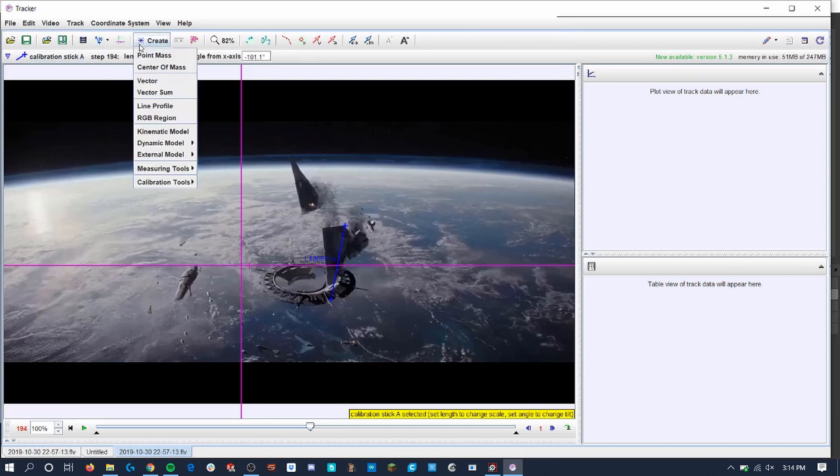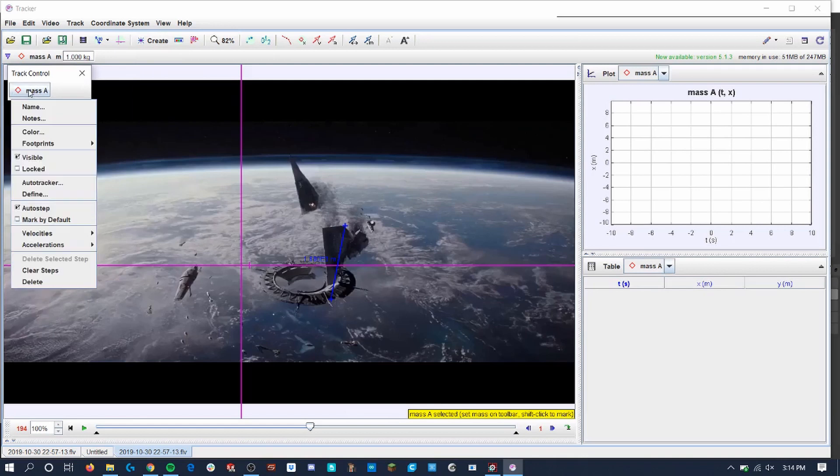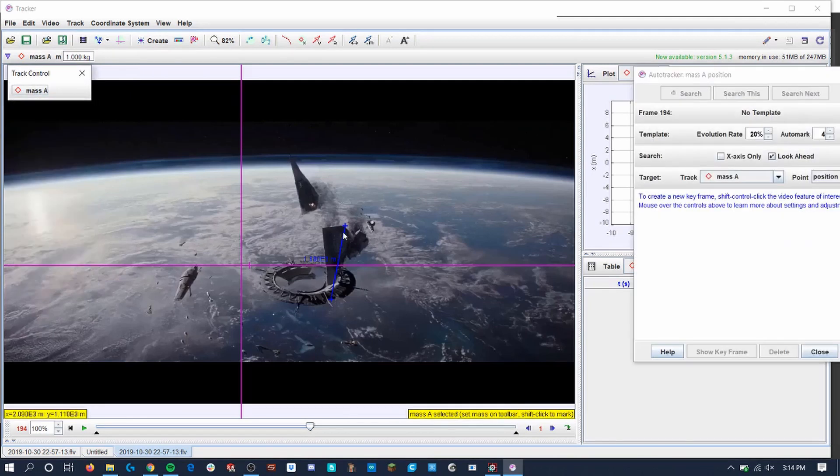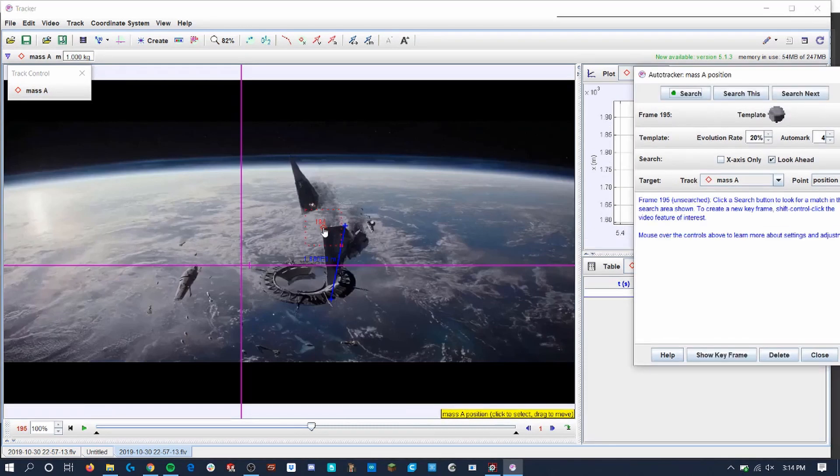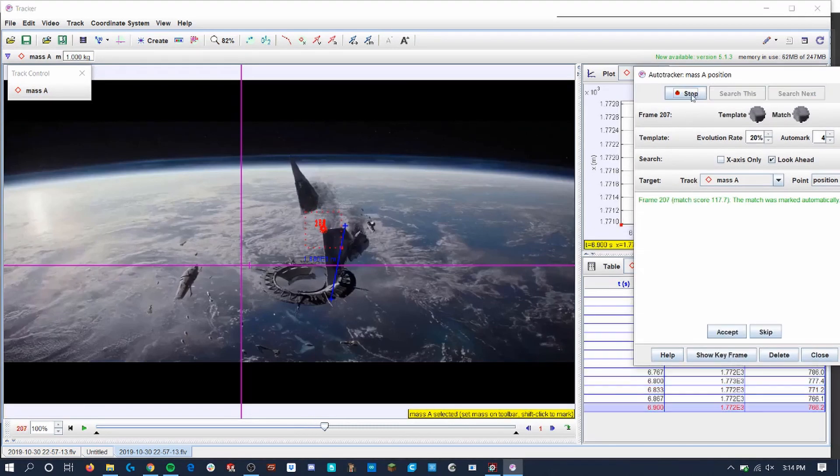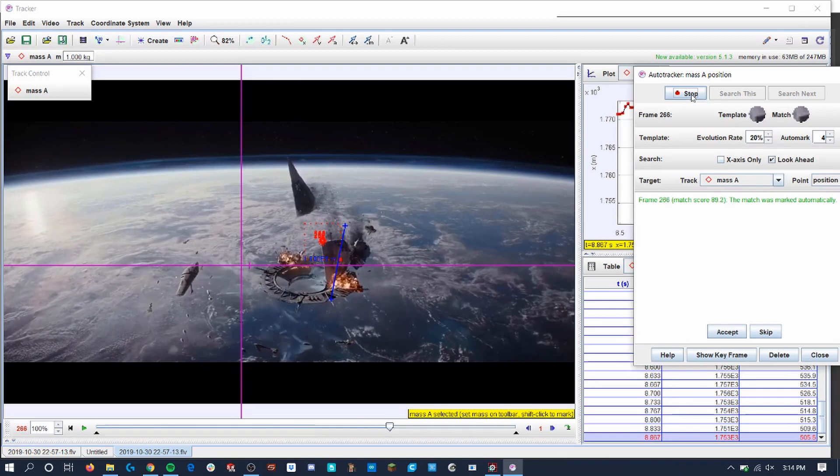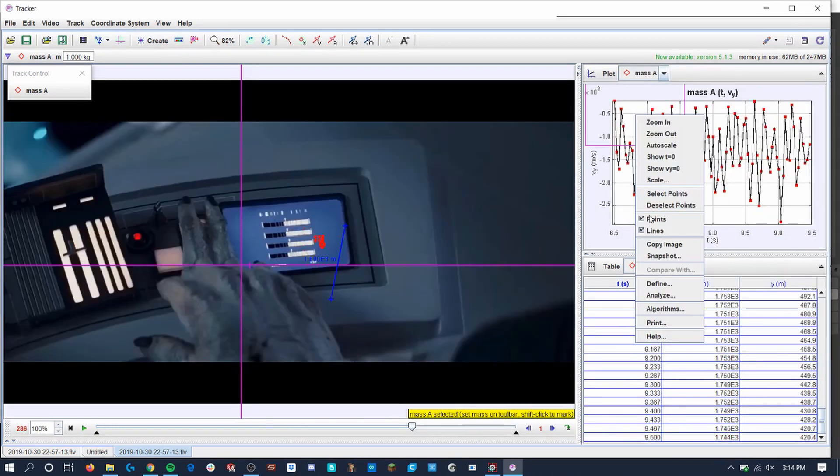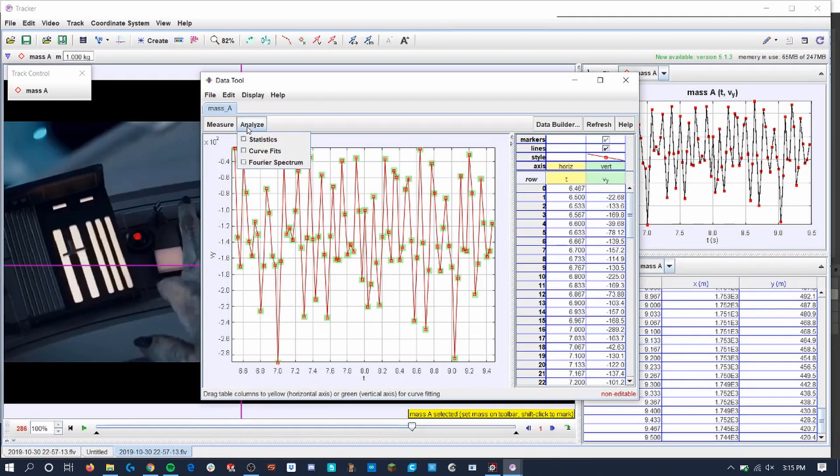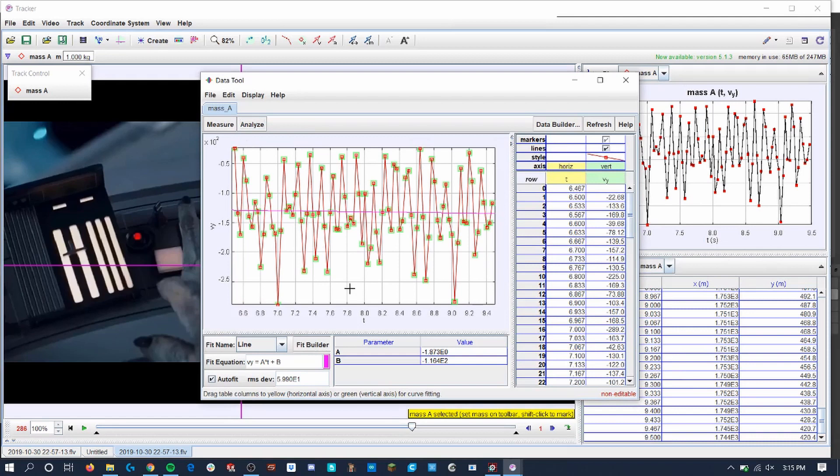Next, I created a point mass and used the auto tracker feature to track the edge of the starship as it started falling towards the planet. I chose the edge because it was well defined, which would make it easier for the software to track. The software tracked every frame of the clip, and using the plot feature on the panel on the right side of the workspace, I plotted the graph of y-velocity versus time, the slope of which equaled negative 1.873, or the y component of the acceleration, in meters per second squared.